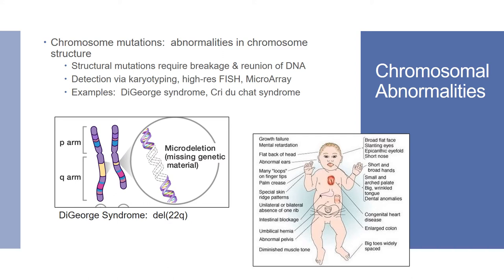Chromosome mutations result in abnormalities in chromosome structure. This can include insertions, deletions, inversions, and so on. These types of mutations can be detected by karyotyping, high-resolution FISH, or microarrays. Examples of chromosome abnormalities include DiGeorge syndrome and Cri-du-Chat syndrome.